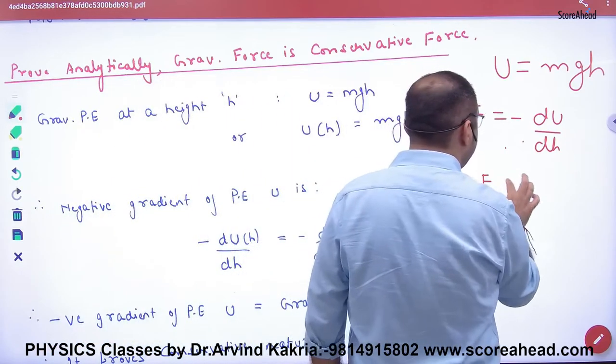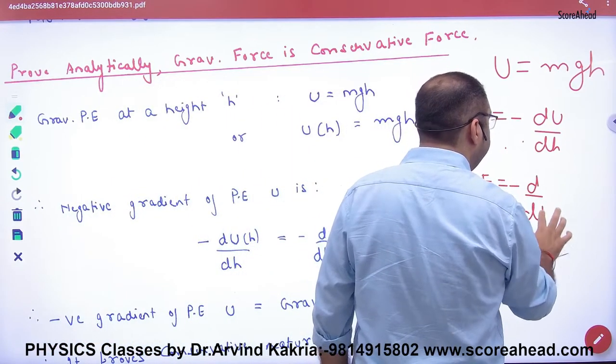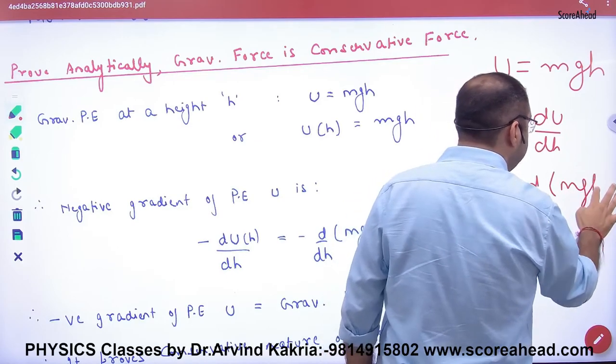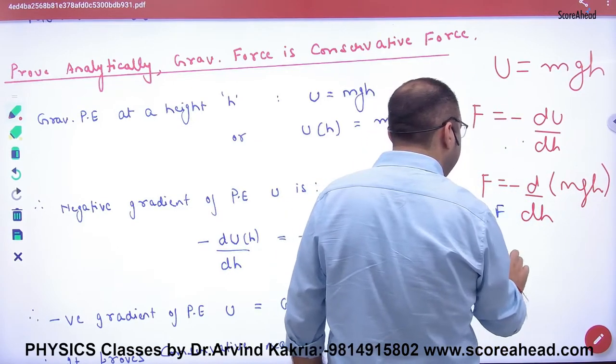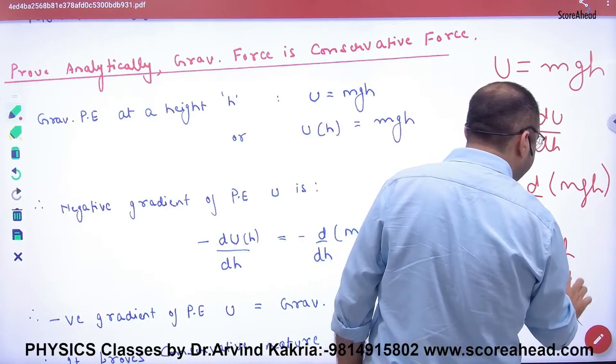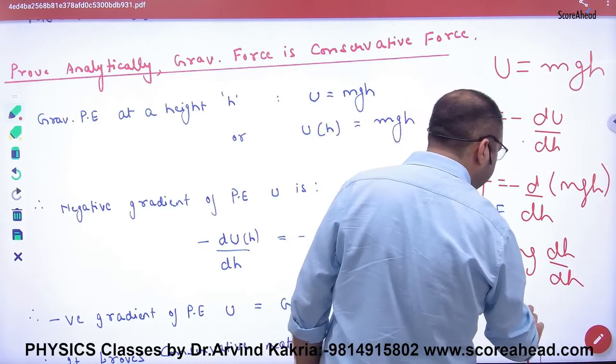When I put this formula, minus dU/dh where U equals mgh. So here, minus mg times dh/dh, which is 1. What is the answer? Minus mg.